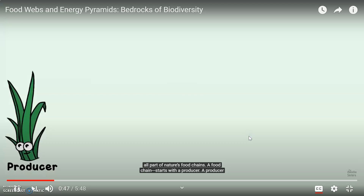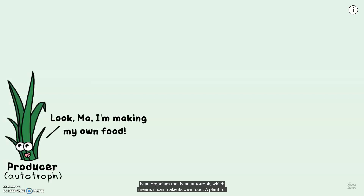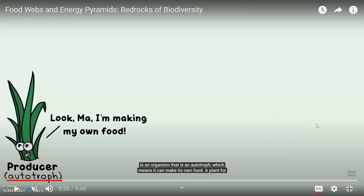A food chain starts with a producer. A producer is an organism that is an autotroph, which means that it makes its own food — a plant. All of our food chains and food webs start with producers. Producers are typically our plants. They are autotrophs, which means they can make their own food.